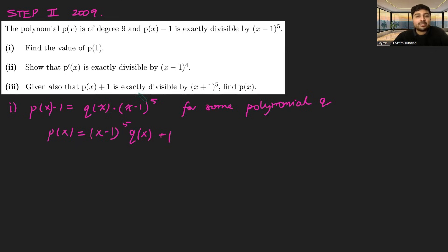If I substitute x = 1 in, that's p(1), this thing here is going to vanish because 1 minus 1 to the 5 is 0, so it's just going to be 1. So p(1) equals 1.